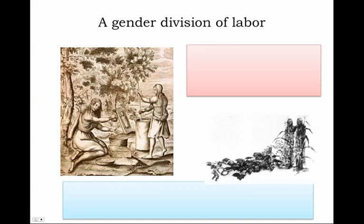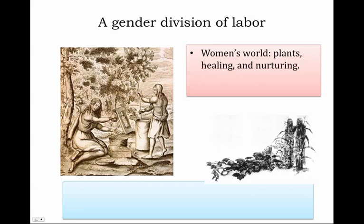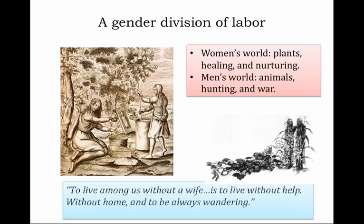We find again a gender division of labor: agriculture was largely a woman's world, providing not only food for sustenance but also plants and herbs for healing and nurturing, whereas the men's world tended to be hunting and war. A traditional adage stated: 'To live among us without a wife is to live without help, without home, and to always be wandering.' The idea of rootedness to a family community gave the veneer of civilization to the peoples of the Iroquois Confederacy.